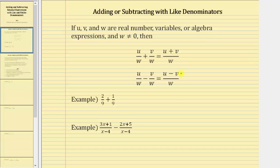This is true as long as u, v, and w are real numbers, variables, or algebraic expressions, and w doesn't equal zero. w can't equal zero because division by zero is undefined.